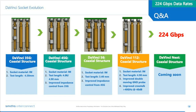Moving to another question: does Smith's Interconnect have a product ready today to meet this requirement, or is it just in development? We do have a product that can meet 224 gigabit data rates. However, this is a case-by-case basis — I don't think there is a one-size-fits-all solution to achieve these speeds. We need to work with the customer and look at the IC package layout to help deliver a solution for these speeds.